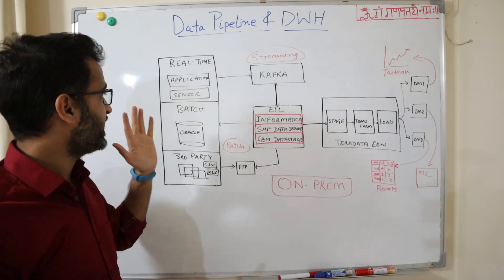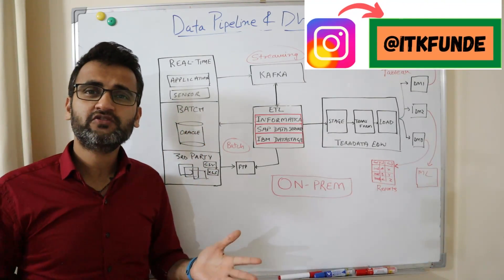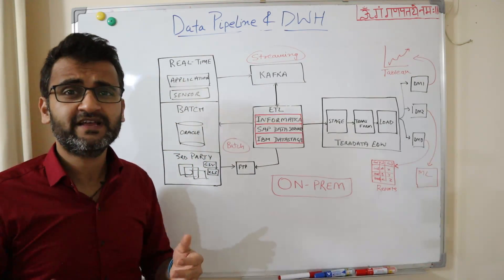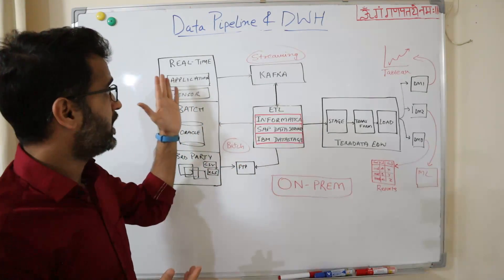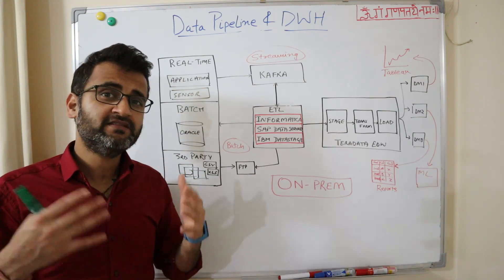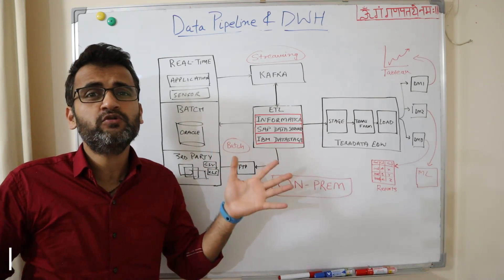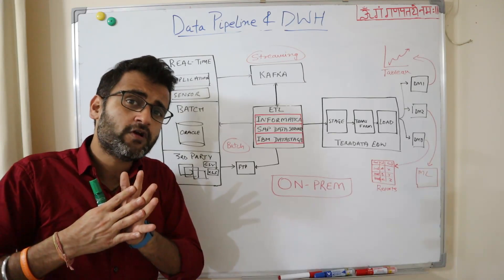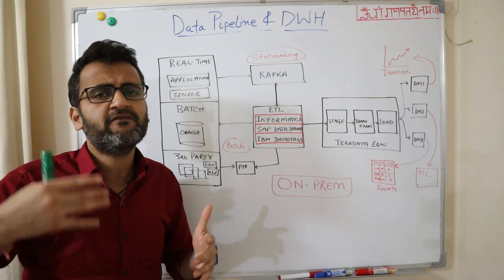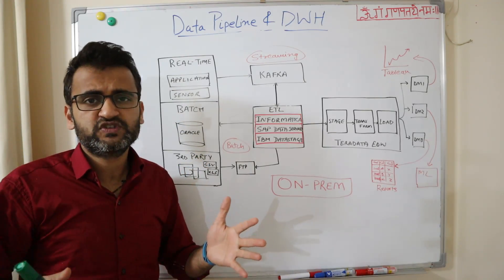We have real-time data sources as well as batch-type data sources. Real-time data sources are sources which are generating data very quickly — in the matter of milliseconds. These events which are happening need to be streamed somewhere in real time. This data is generally called unbounded data — because there is no boundary to how much data will be generated or for how long. It can continue to generate data every millisecond, every hour, every day of the year.